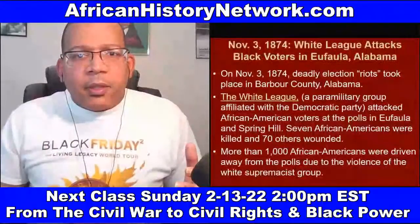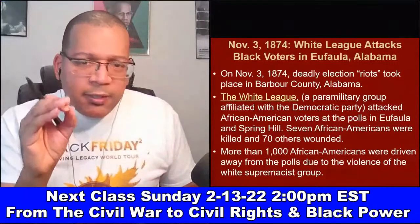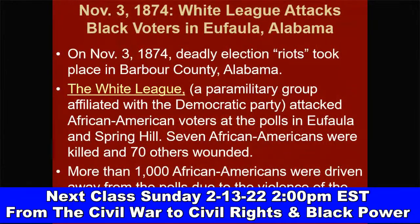We talk about the Ku Klux Klan post-1871, the Freedman's Bureau of 1865, the Freedman's Bank and its collapse, and different massacres — like the Colfax Massacre of 1873 and the Eufaula, Alabama massacre of November 3rd, 1874, where the White League, a paramilitary group affiliated with the Democratic Party, attacked African-American voters at the polls. Seven African Americans were killed, 70 others wounded, and more than 1,000 were driven away from the polls by white supremacist violence.